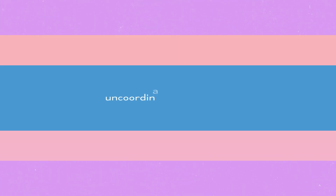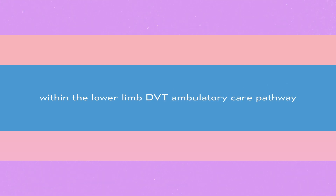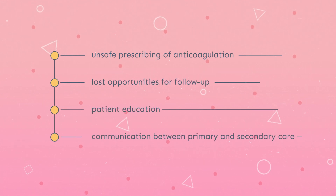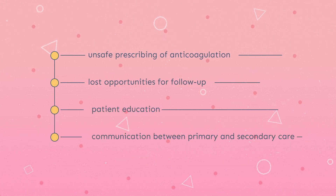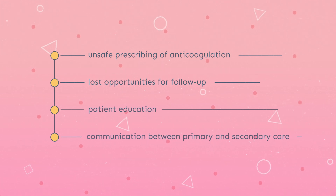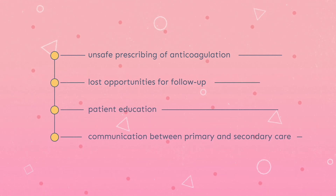Recent incident reports have identified uncoordinated processes within the lower limb DVT ambulatory care pathway, resulting in unsafe prescribing of anticoagulation and lost opportunities for follow-up, patient education, and communication between primary and secondary care.